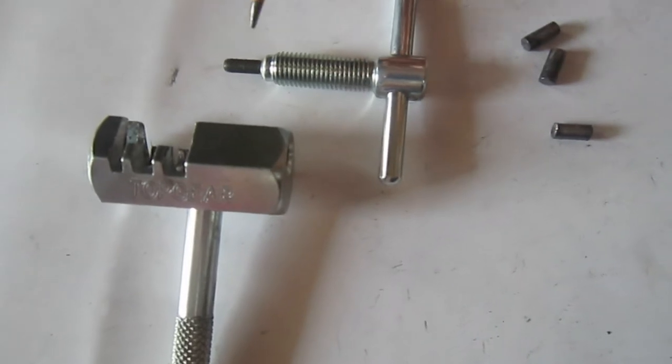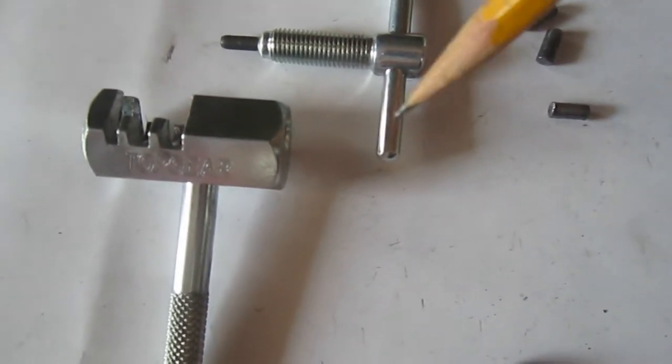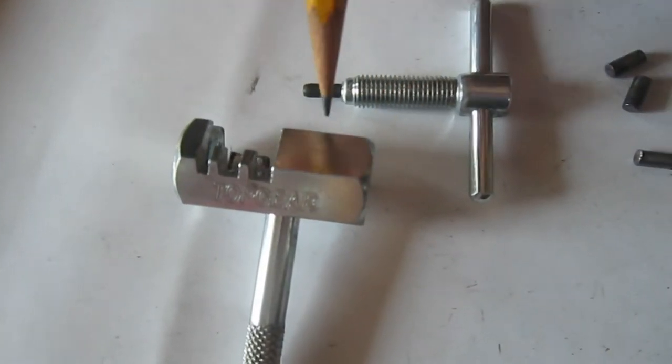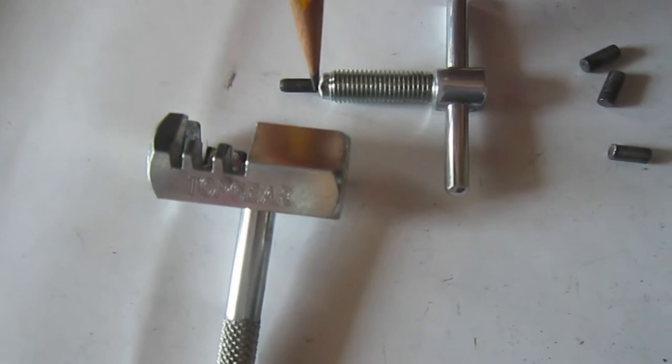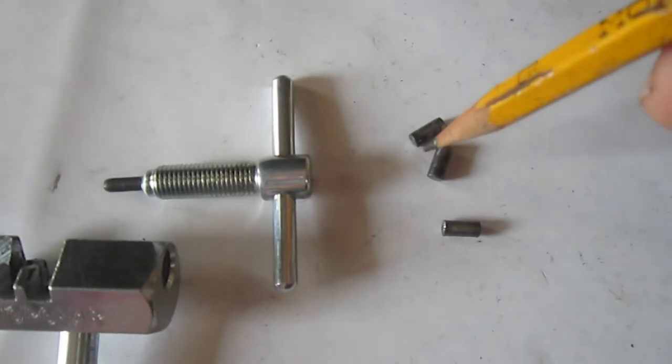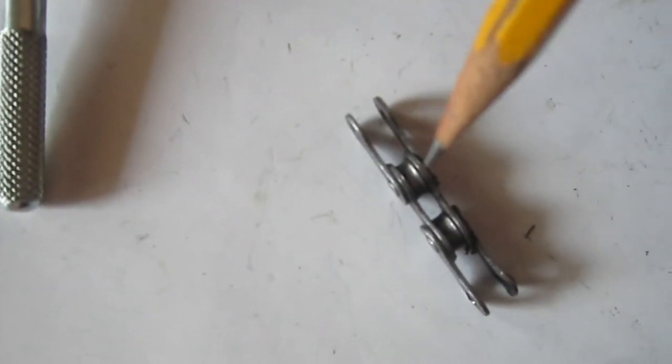This is the thimble of the chain tool. This goes inside there like this. Now if it gets broken, this usually gets broken, don't throw it away because you can convert it into a tool to place back the pin into your chain.